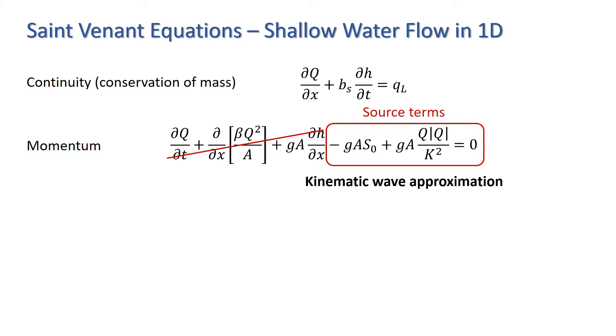The momentum equation thus reduces to S₀ equals Q mod Q over K squared. That is, the gravity forces and friction forces are balanced. This approximation implies steady, uniform flow.